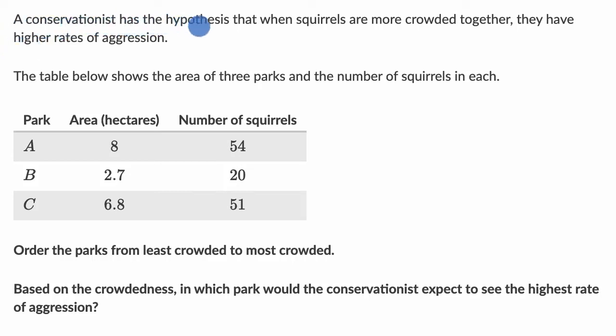We're told that a conservationist has the hypothesis that when squirrels are more crowded together, they have higher rates of aggression. The table below shows the area of three parks and the number of squirrels in each.